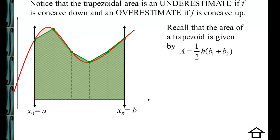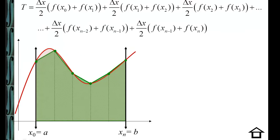Recall that the area of a trapezoid is given by one half the height times the sum of the bases. The two bases have to be parallel, so the bases of any given trapezoid are going to come from function outputs. Breaking this down one trapezoid at a time, we'll see that we have one half the height, which is delta x, and then the first two bases for our first trapezoid will be f of x-sub-0 plus f of x-sub-1.